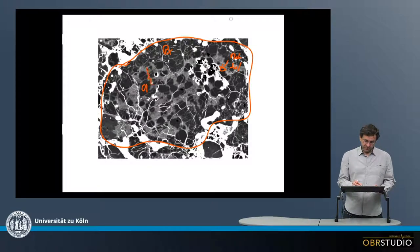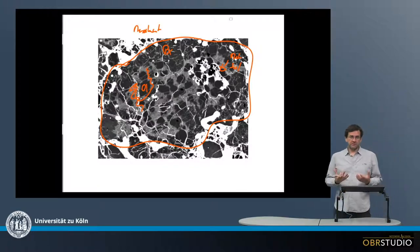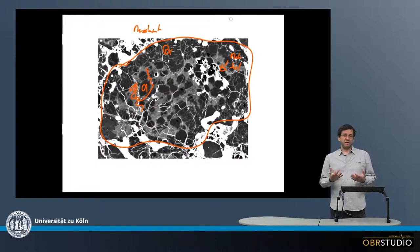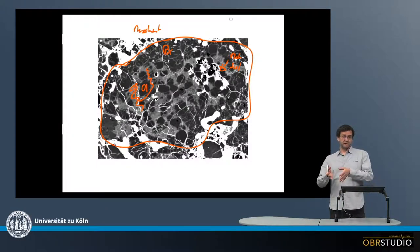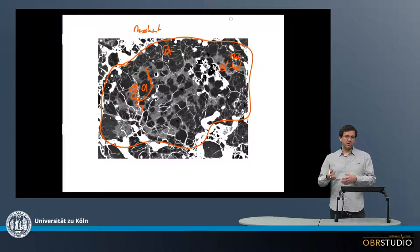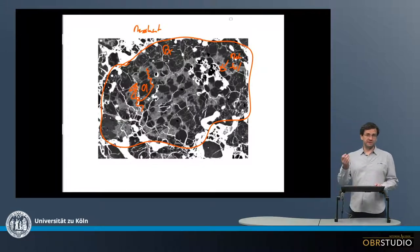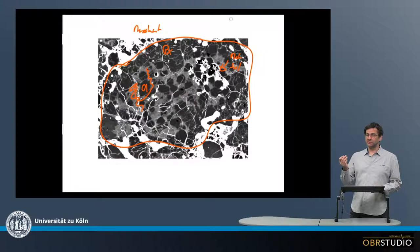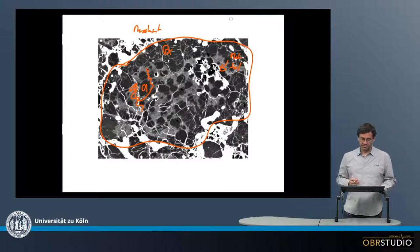In between these porphyritic grains is something we call the mesostasis, and it consists of calcium aluminum-rich phases. It is either fine crystalline — then pyroxene, feldspar, or so — or it is glassy, in both cases indicating quite fast cooling and in cases also quenching of this material.